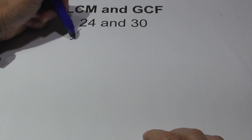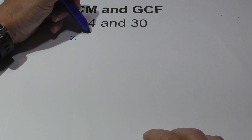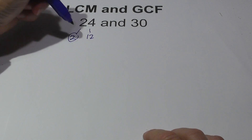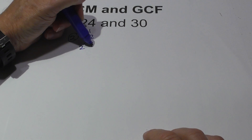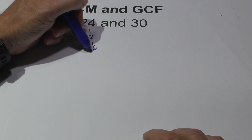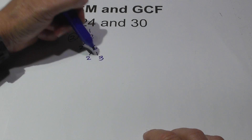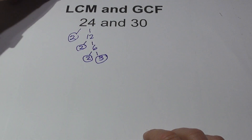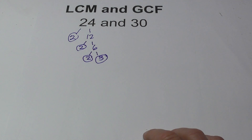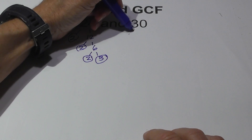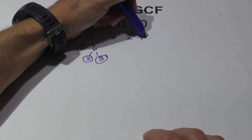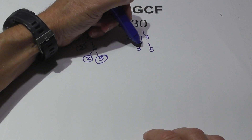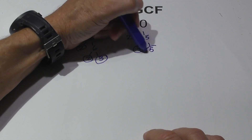Starting with 24: 2 times 12 is 24. Circle the 2 because it is prime. Now 2 times 6, and then 2 times 3. Circle all the prime numbers. Now for 30, we've got 2 times 15, then 3 times 5. Circle the prime numbers.